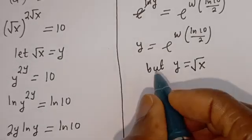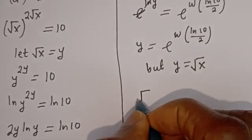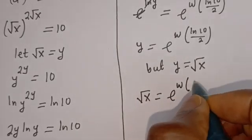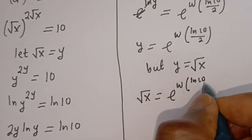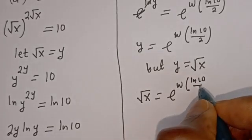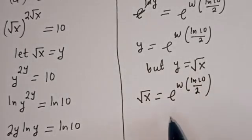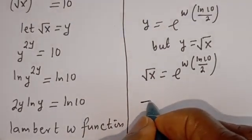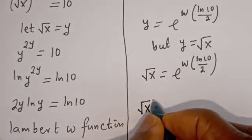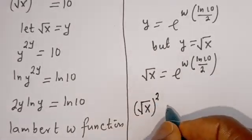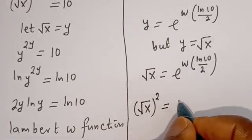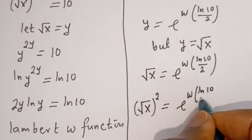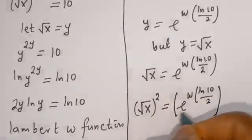Now let's square both sides since we are looking for the value of s. If we square both sides of this equation, we have square root of s, all squared, is equal to e to the power of W bracket ln of 10 over 2, all squared. Therefore s equals that expression squared.